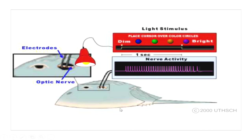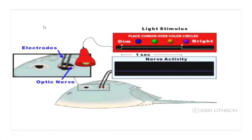The horseshoe crab was an attractive experimental system because one could make a small slit in the shell, expose the optic nerve, connect electrodes to its surface, and then connect those electrodes to an amplifier displayed on a recording device. One could then present lights of various intensities to the eye. The optic nerve, of course, carries information from the eye to the animal's brain. What Hartline found was that with a dim light, nothing happened, but as the intensity increased, a sequence of spike-like events appeared.